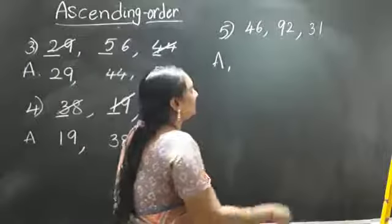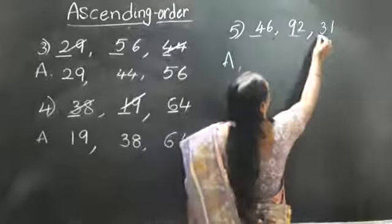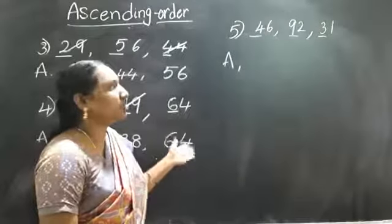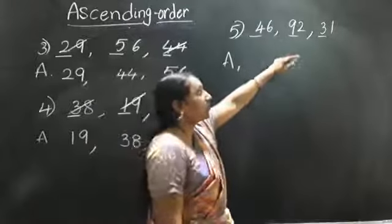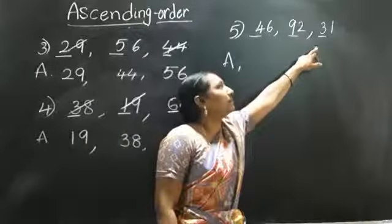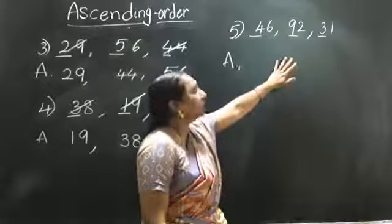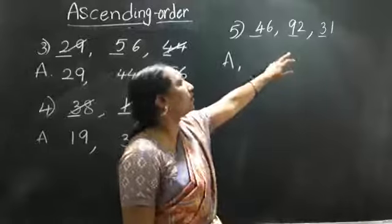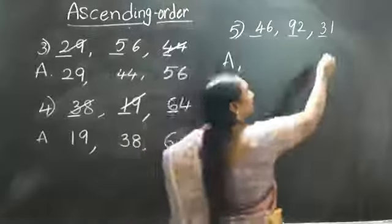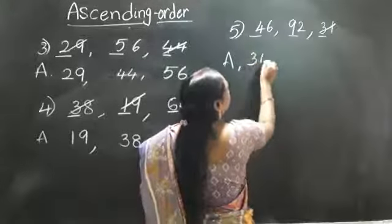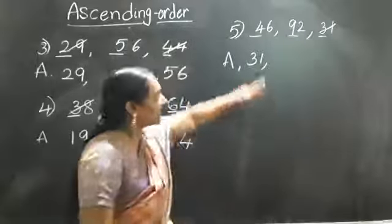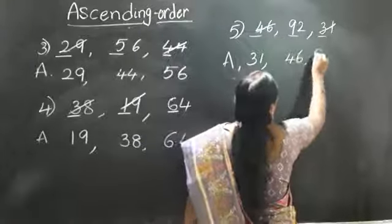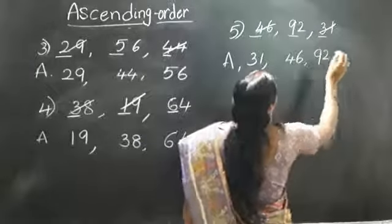Now here — tenths place: four, nine, three. Zero is there? No. One is there? No. Two is there? No. Three is there? Yes. Cut the thirty-one, write this side, margin. Next — four is there? Yes. Forty-six. Cut the forty-six, write this side. Thirty-one. Remaining number is ninety-two.